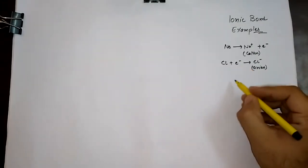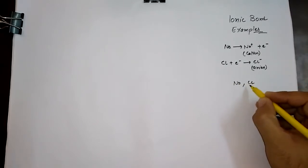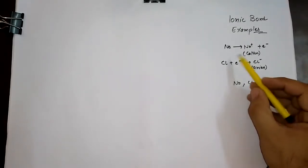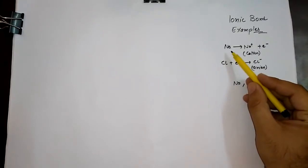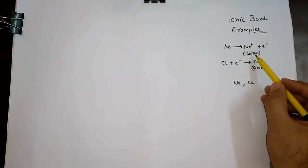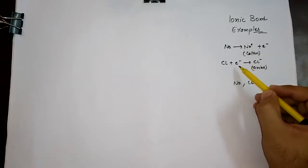Since the atoms are electrically neutral — meaning the electrons and protons are equal in number — by losing one electron, the metal changes into a cation. Similarly, the non-metal by gaining the electron turns into the anion.